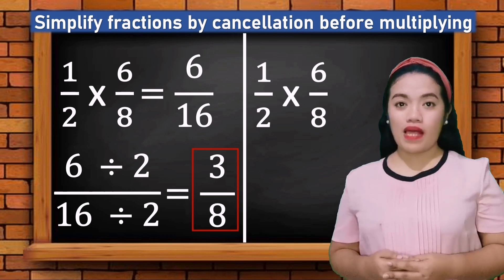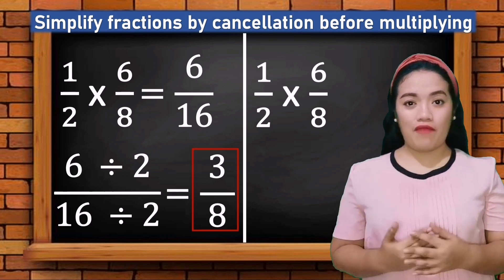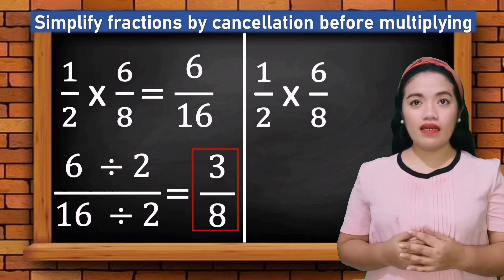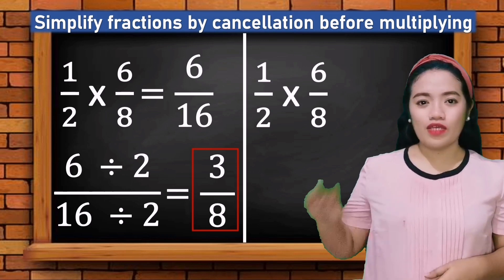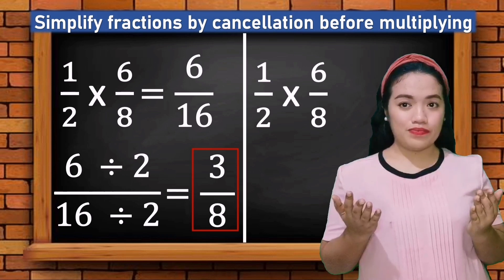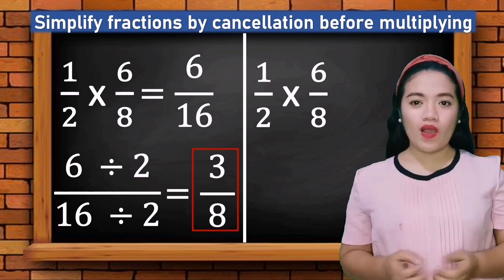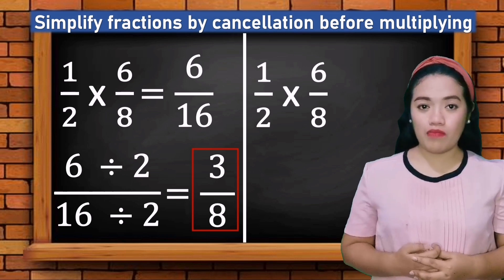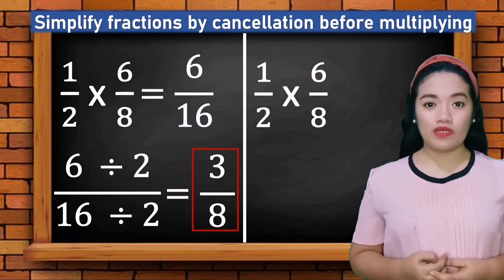Now let us do the second method: cancellation before multiplying. Cancelling a fraction is also called simplifying fractions. A fraction can be made simpler by dividing the numerator and denominator by their common factor. You can either use the GCF or start simplifying using prime numbers.